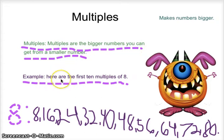Example, here are the first 10 multiples of 8: 8, 16, 24, 32, 40, 48, 56, 64, and 72, and now comes 80.